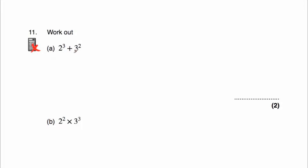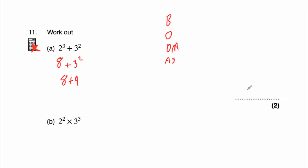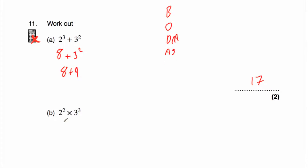Question 11a: work out 2 cubed plus 3 squared. No brackets; we have two orders, so work left to right. 2 cubed is 2 times 2 times 2: 2 times 2 is 4, times 2 again is 8. Then 3 squared is 3 times 3, which is 9. Finally, 8 plus 9 is 17.